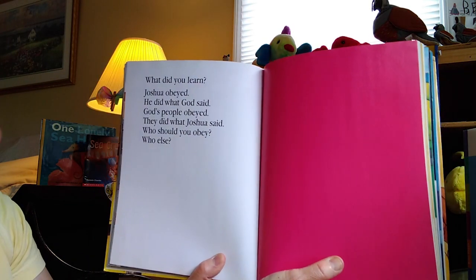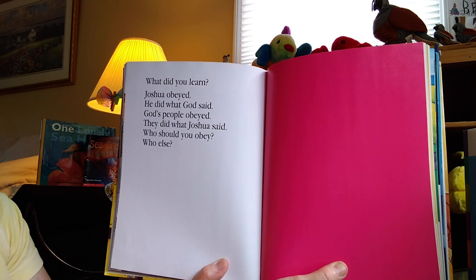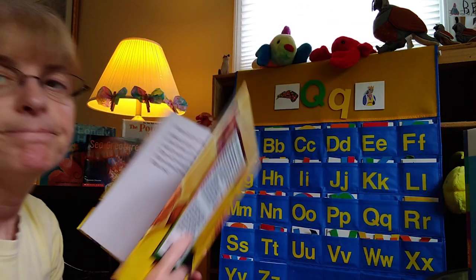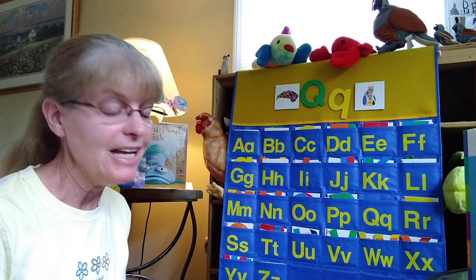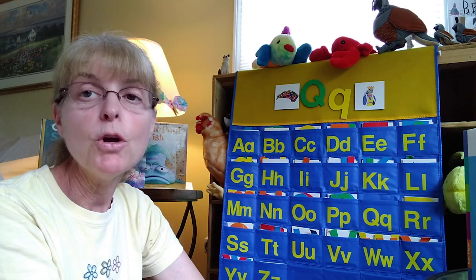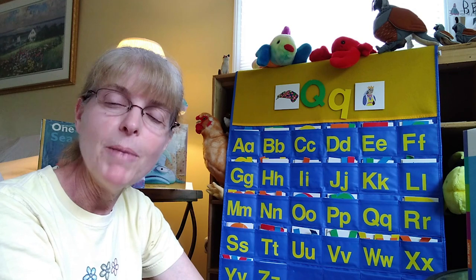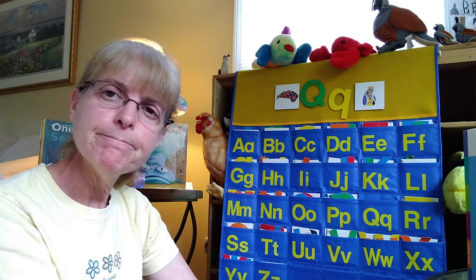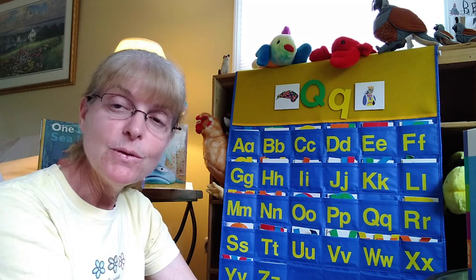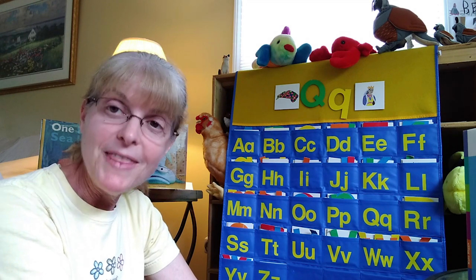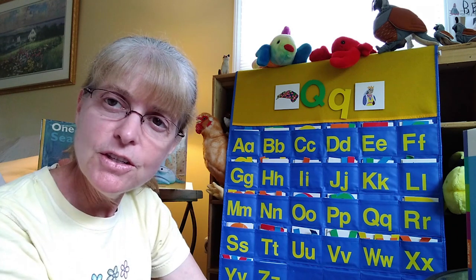What did we learn? Joshua obeyed — he did what God said. God's people obeyed — they did what Joshua said. Who should you obey? To obey means to listen and to do what someone says. I think that we should obey what God says. God knows what's very best for us, and when he tells us what to do, we should obey and do it. Who else should we obey? I think you should obey your mom and your dad. God gave you a mom and a dad, and they know what's best for you, too. So you should obey what they say. That's called being a good listener. Are you a good listener? I bet you are.